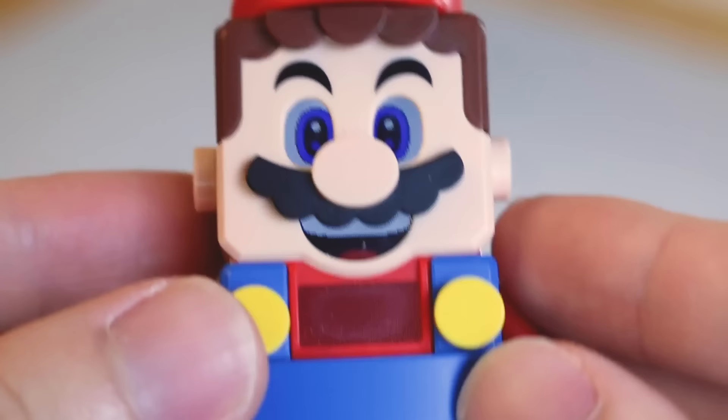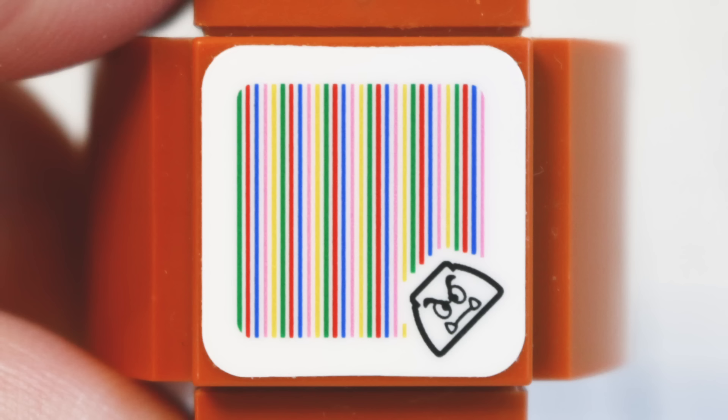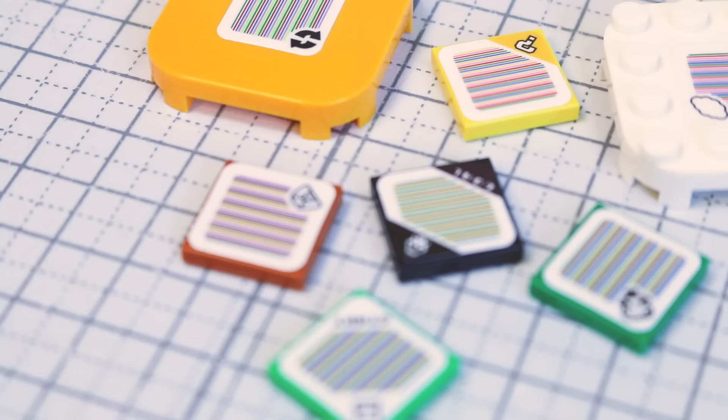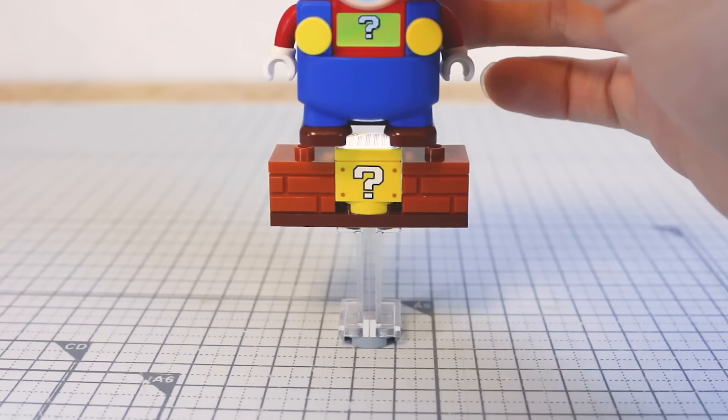LEGO Mario's magic lies in the little barcode scanning camera nestled in his bum. The codes themselves comprise of 29 lines, 0.2mm in width, and spaced 0.2mm apart. Each holds a unique sequence of colors, which tells Mario whether it's a Goomba, question mark block, or some other action.